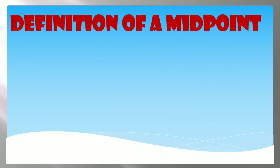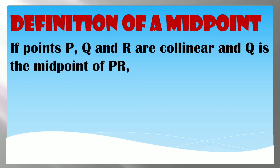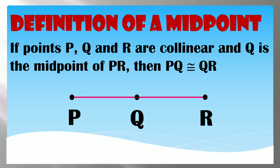The Definition of a Midpoint states: if points P, Q, and R are collinear and Q is the midpoint of PR, then PQ is congruent to QR. This means if Q is the midpoint of segment PR, then the two segments PQ and QR are congruent.